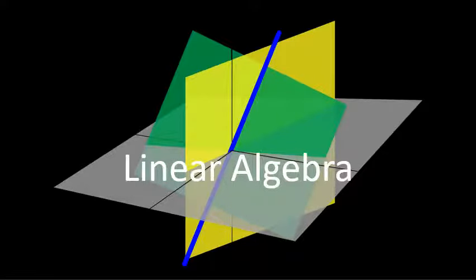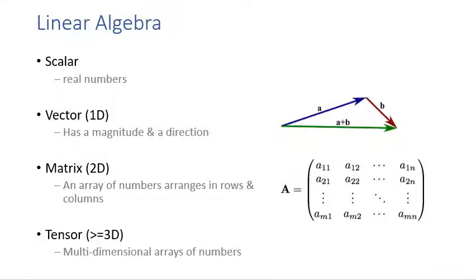Now let's review linear algebra. Let's start with the basic elements. The first is the scalar — a scalar represents a real number, a quantity or value. The second element is a vector. A vector is actually an array of scalars.